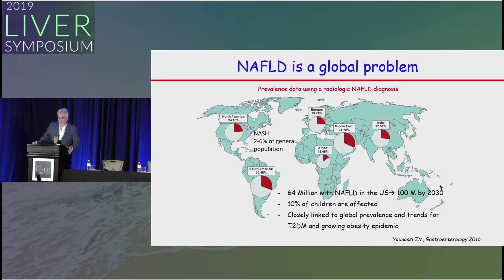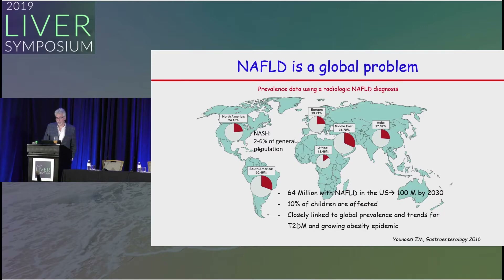NAFLD is a global health problem. Prevalence data using radiologic diagnosis shows that in the U.S., prevalence is about 24% to 35% depending on which part of the country. This means 2% to 6% of the general population in the U.S. has NASH. The Middle East and South America have very high prevalence. Currently 64 million people with NAFLD are in the U.S., and that number will become 100 million by 2030.